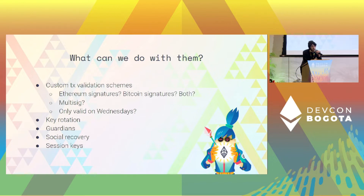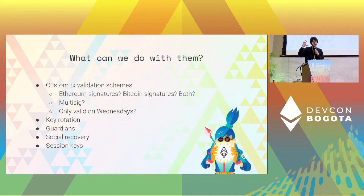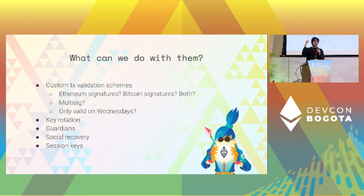We can also have guardians and social recovery, which is a very good feature. And session keys — think of session keys like a JSON web token or a set of permissions you grant, for example, to a web application. You sign once a set of permissions defined by some policy, and then that website can act on your behalf without you having to sign each transaction every time.